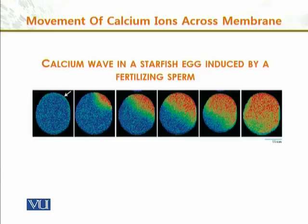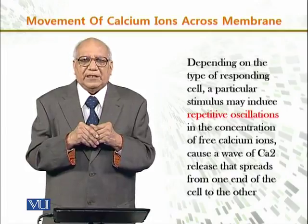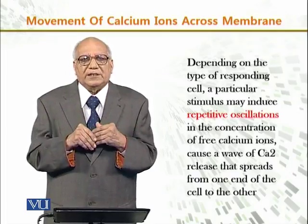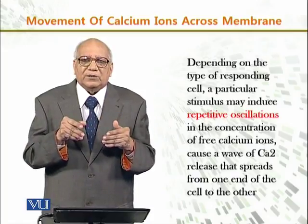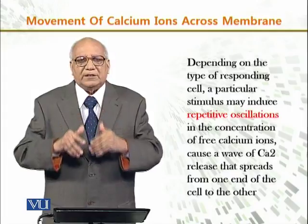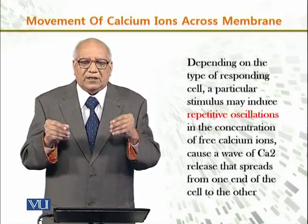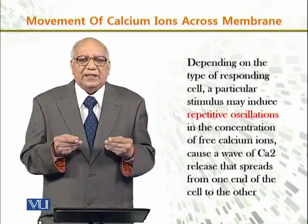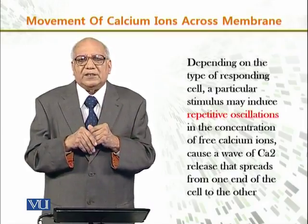Depending on the type of responding cell, different cells respond differently to calcium. A particular stimulus may induce periodic oscillations in the concentration of free calcium ions. This means the calcium concentration is not constantly increasing or decreasing — sometimes it increases, sometimes it decreases. This oscillation causes a wave of calcium release that spreads from one end to the other end of the cell, controlling the signaling process continuously during cell growth.